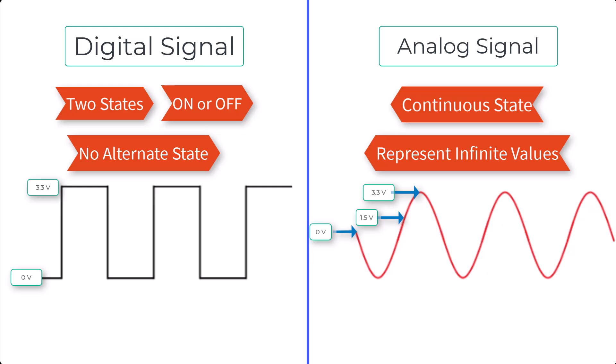Some analog signals might go as high as 12 volts, or even 120 volts in certain applications.